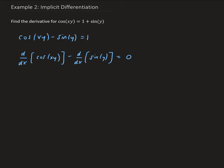So we're going to go ahead and simplify these now. The derivative of cosine of xy is going to be minus sine of xy, times the derivative with respect to x of x times y. Minus the derivative of sine y is going to be cosine y, times dy/dx. We're using implicit differentiation, so since we're taking the derivative with respect to x, whenever we come across a term with y in it, we need to put dy/dx.